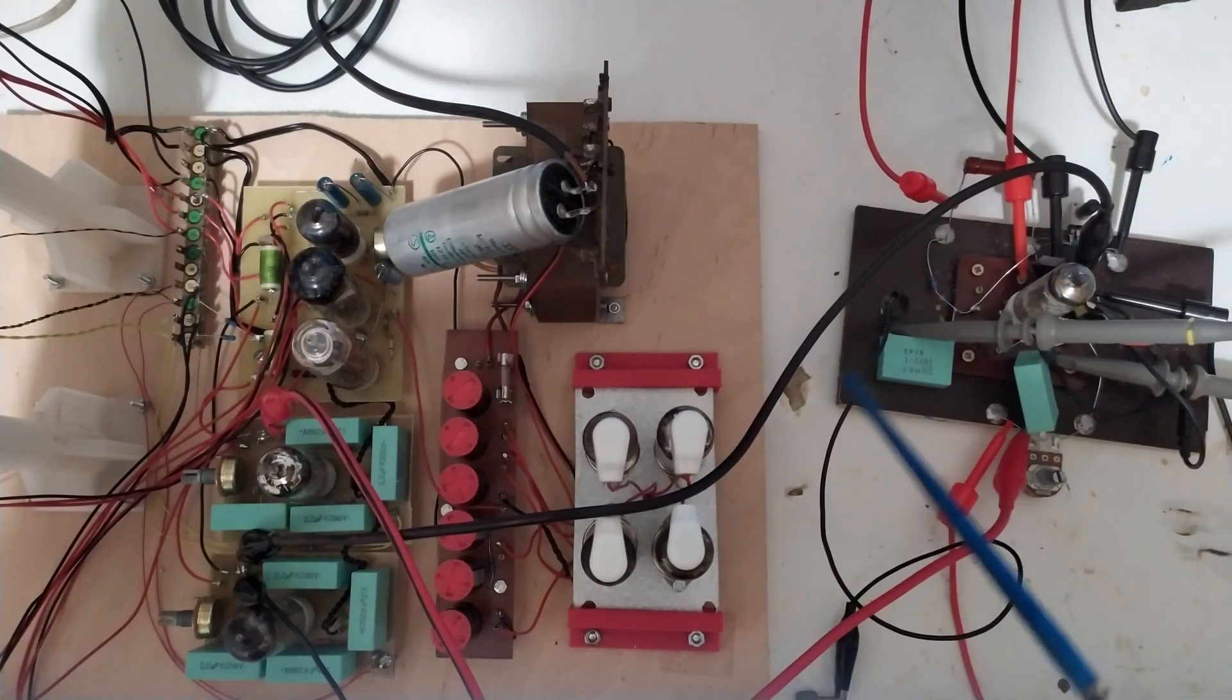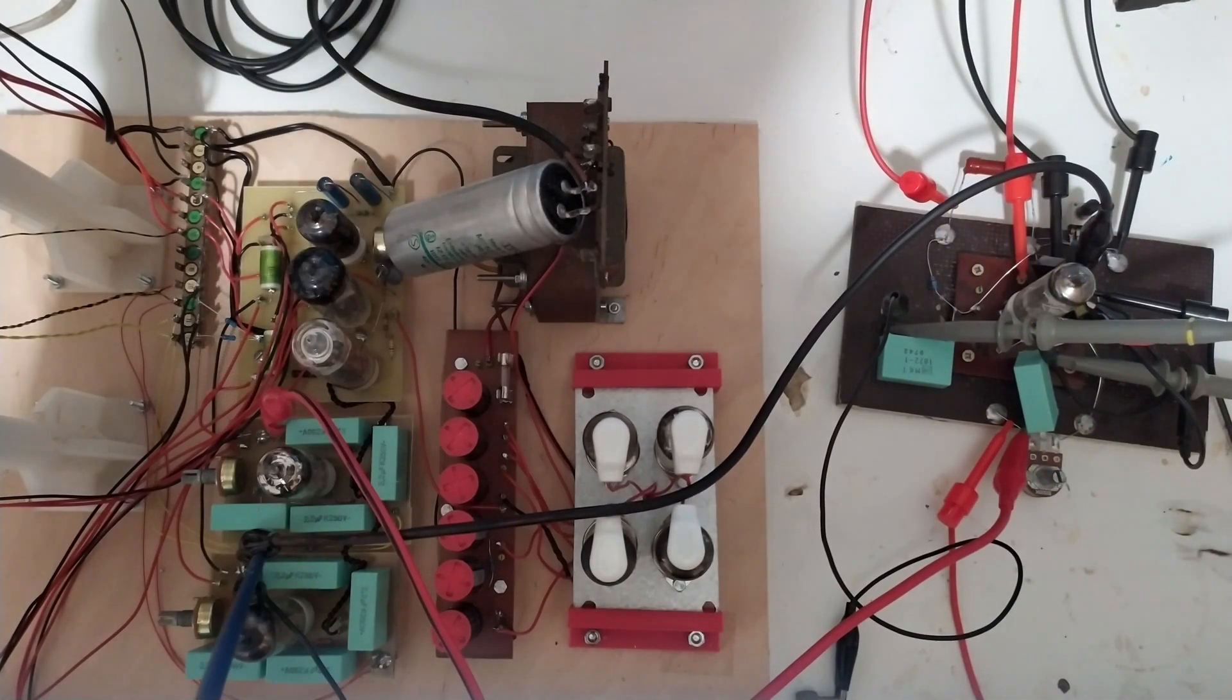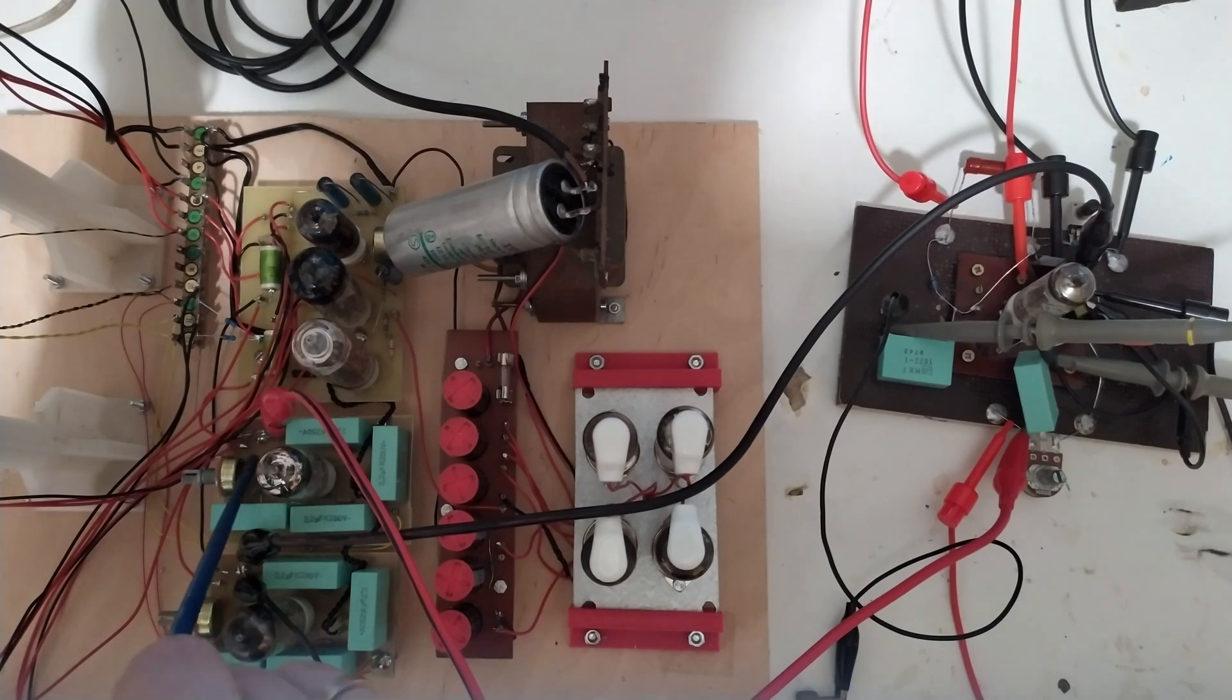The negative lead from signal generator is connected to the cathode of the tube. The cathode of the tube is also connected to ground on this deflection board here, and therefore it's also connected to ground on this deflection board here because they share the same ground.